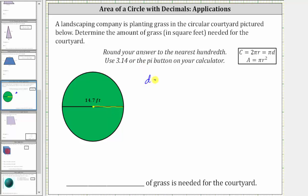So if the diameter d is equal to 14.7 feet, then the radius r is equal to 14.7 feet divided by two, which is equal to 7.35 feet.